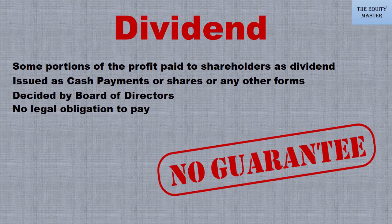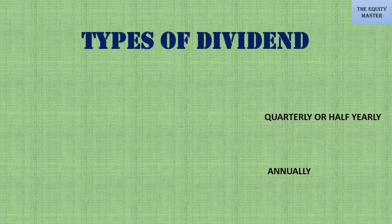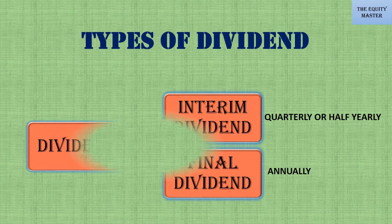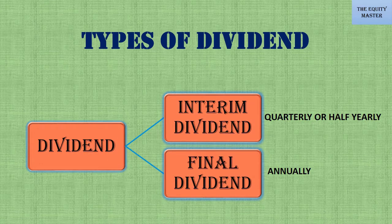Let's discuss types of dividends according to time. If dividends are paid out after interim results of the company — that is, quarterly or half yearly — they are called interim dividends. If dividends are paid out after the final result of the company, they are called final dividends.